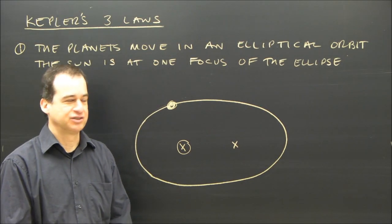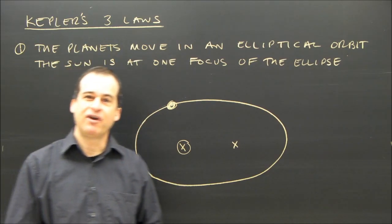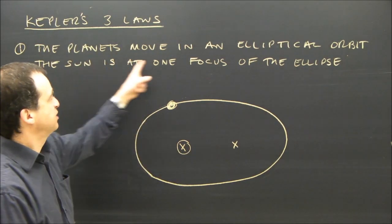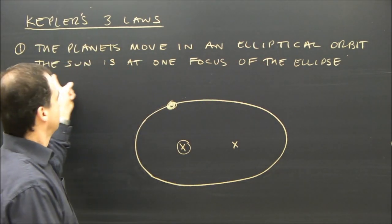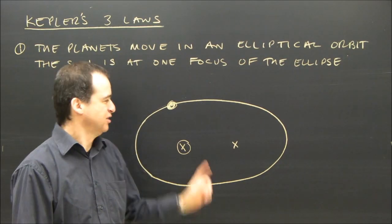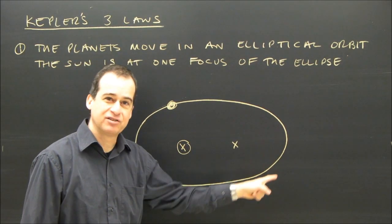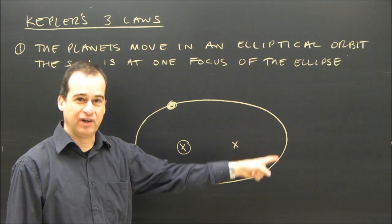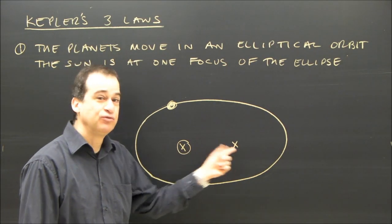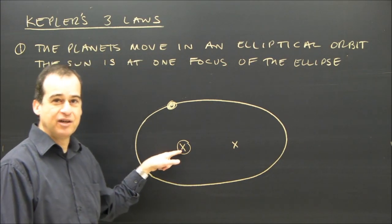We're going to look at Kepler's Three Laws. The first law is a statement of how the planets move. The planets move in an elliptical orbit, the sun is at one focus of the ellipse. So the path any planet takes around the sun is in the shape of an ellipse, and an ellipse has two foci, the sun is at one foci.